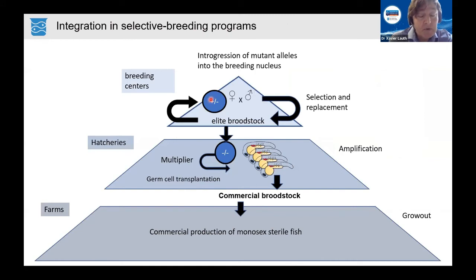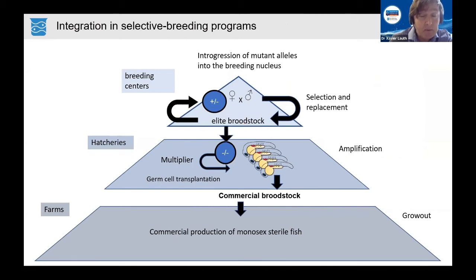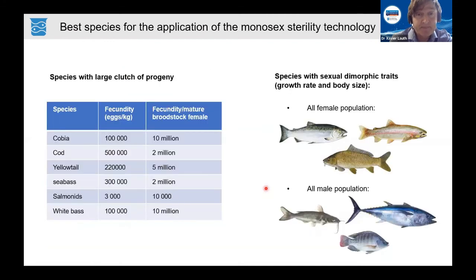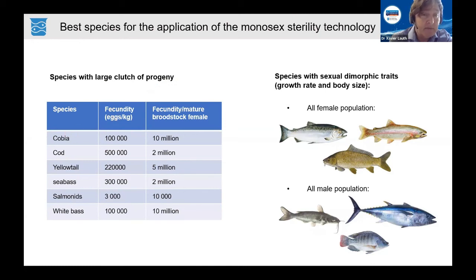We believe this monosex sterility technology can be incorporated into a selective breeding program. The mutations can be maintained in the breeding nucleus as hemizygotes, where no phenotype of sterility or sex conversion appears, allowing selection of an elite broodstock at every generation. This elite hemizygous broodstock can then be intercrossed to produce homozygous mutants, which are used in germ cell transplantation to create a commercial broodstock that only produces monosex sterile progeny. The technology is best suited for species with high fecundity and good survival, where only a limited number of broodstock are needed for full feedstock production.